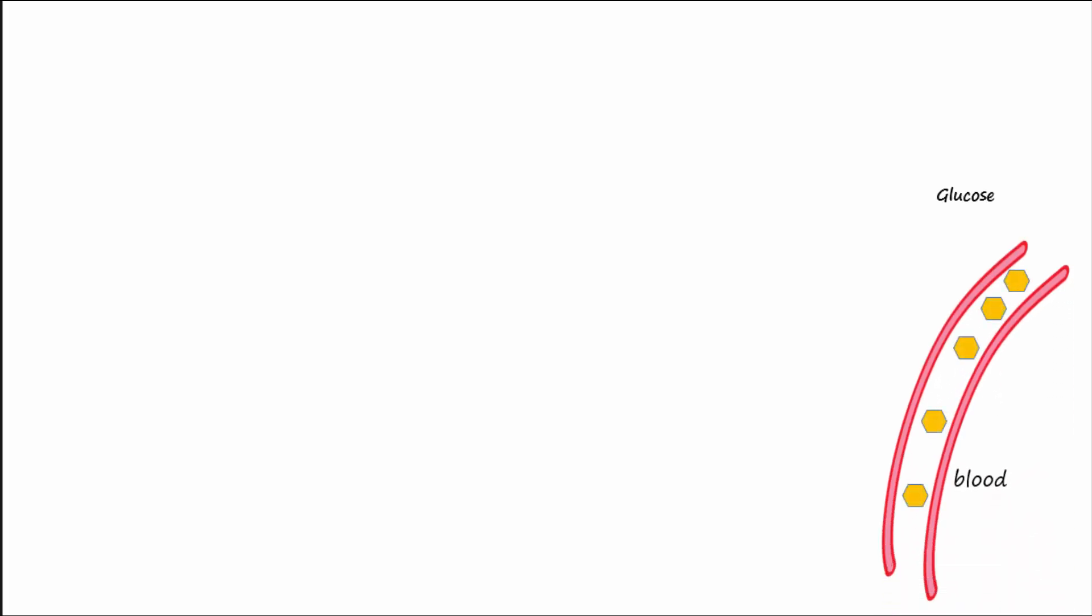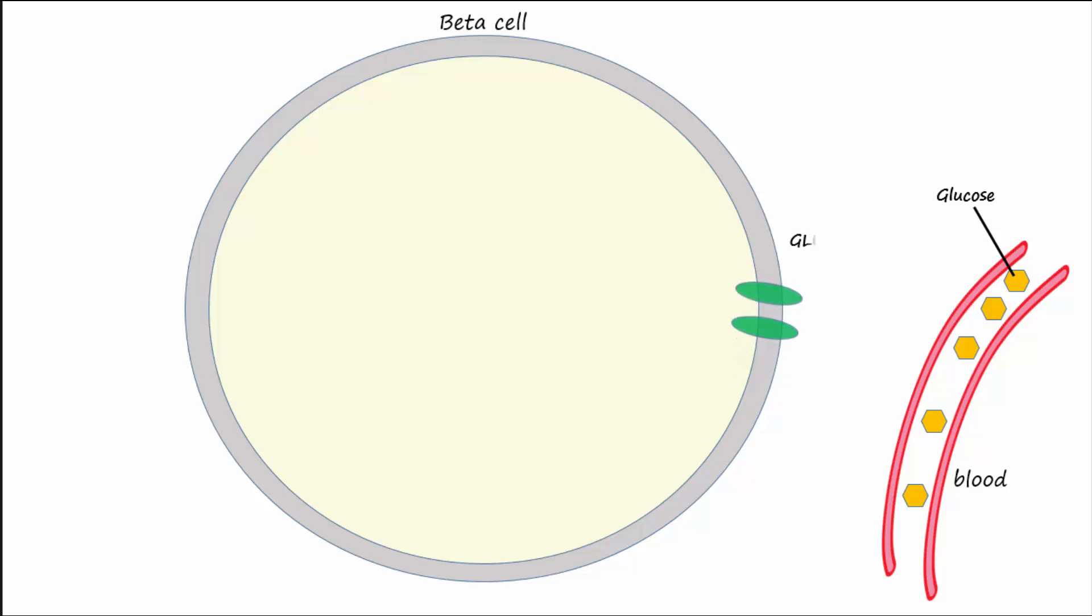This happens as glucose enters the beta cells from the blood through GLUT2 transporters. Once inside the cell, glucose is metabolized to produce ATP. The more glucose that has entered the beta cell, the more ATP that is produced.